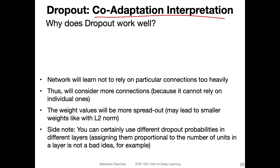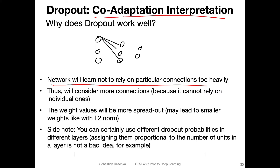The co-adaptation interpretation refers to the fact that the network will learn not to rely on particular connections too heavily. If you have a multilayer perceptron where everything is connected to everything else, and a particular neuron is not there during training — just randomly — then the network will rely more on the other neurons compared to that one single neuron, and vice versa. For example, if one neuron is missing, the network will use the remaining two.